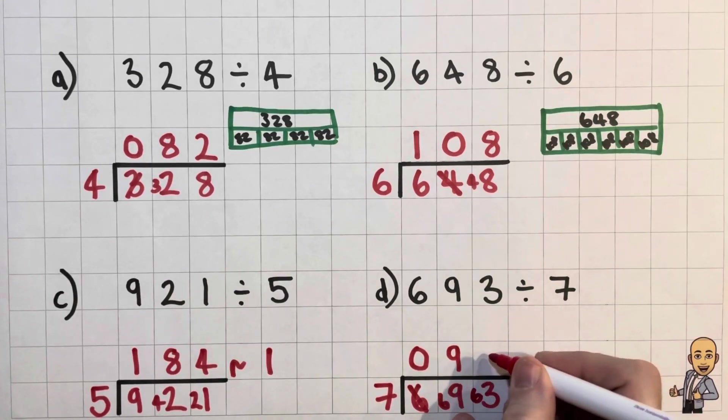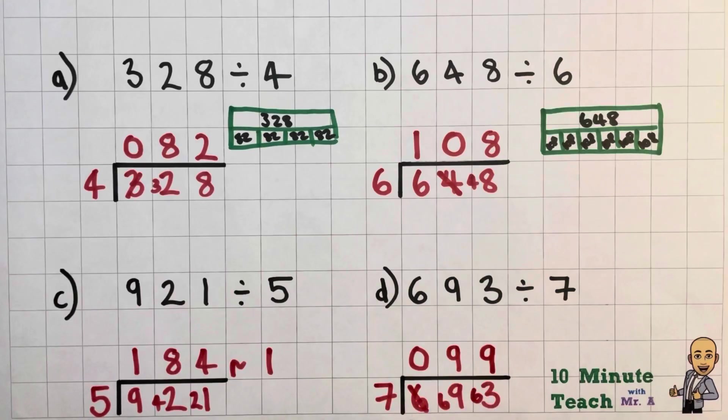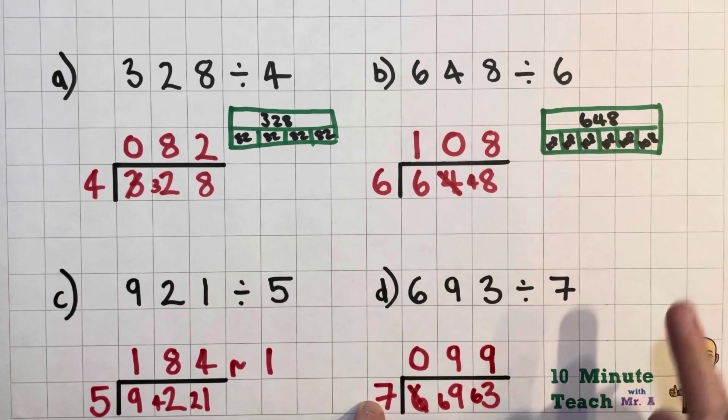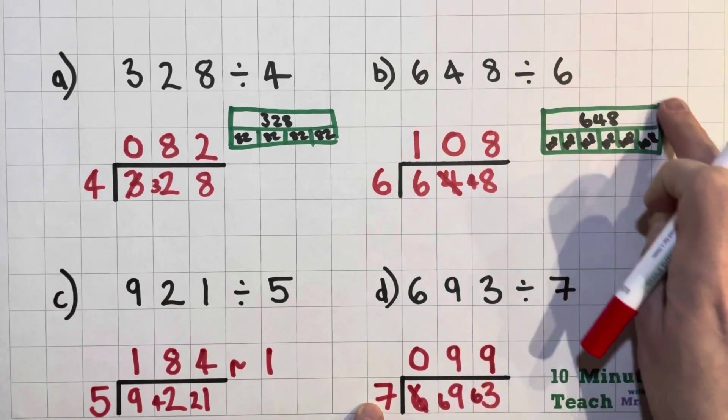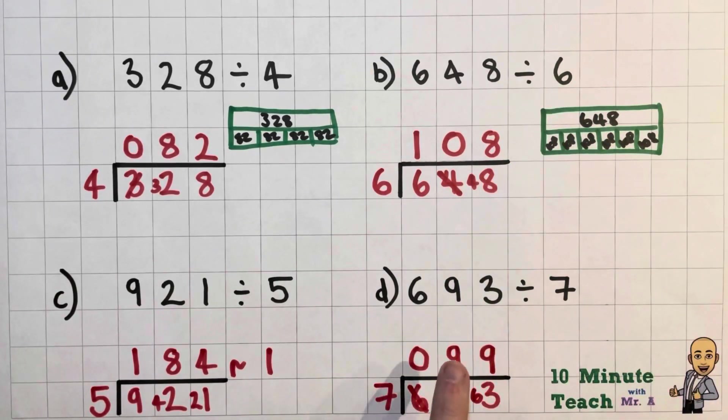Let's have a look. So 7 into 63, we've already done this one, so actually you can fit 9 in there and there's nothing left over. So let's have a look. So if we split 693 into seven equal pieces just like we've done up here but with seven equal pieces, you would get 99. 693 sweets divided by seven people, you would each get 99 sweets, fantastic.